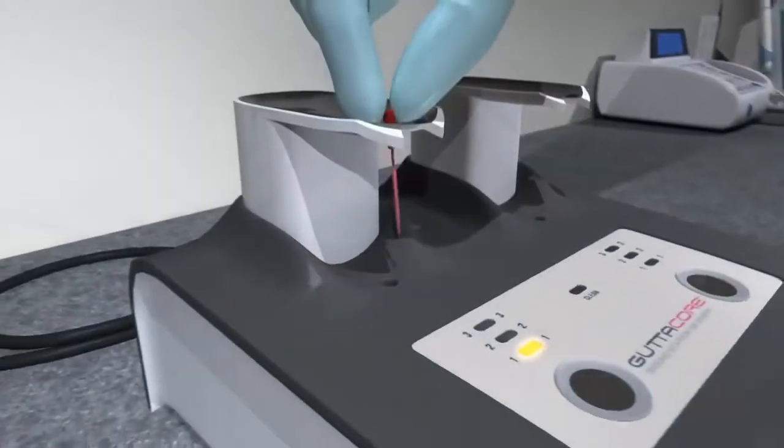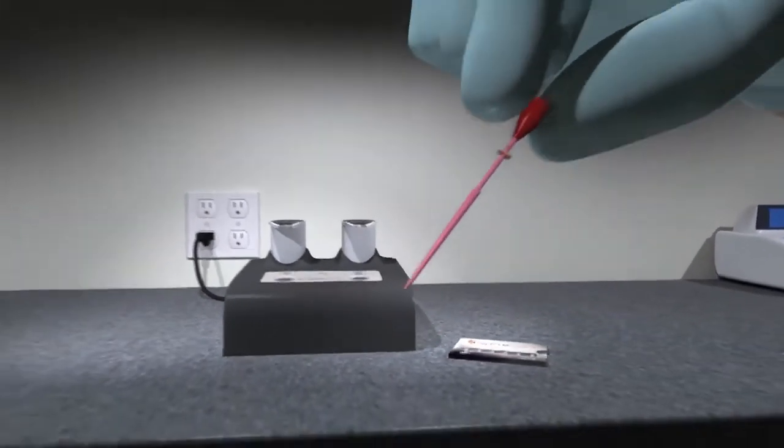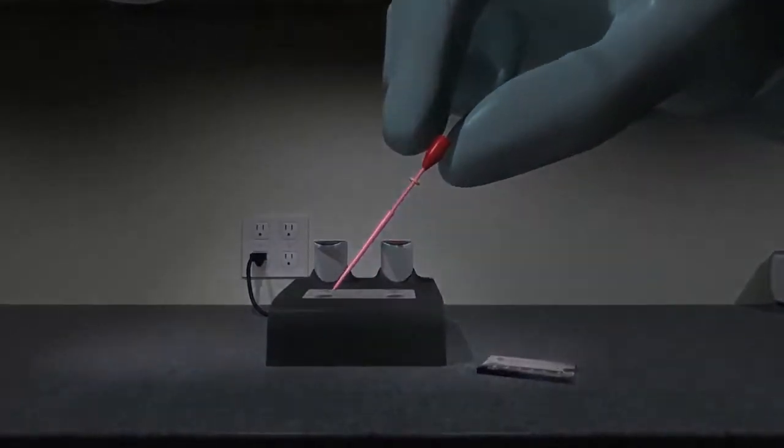Gutta-core obturators are coated with the same flowable alpha-phase gutta-percha that's provided predictable fills for more than 20 years. But gutta-core is changing obturation from the inside out.